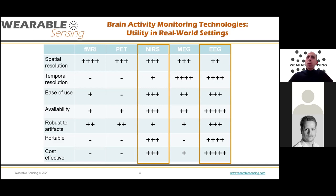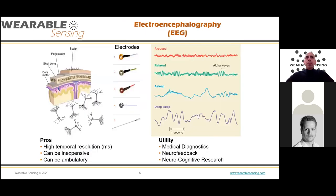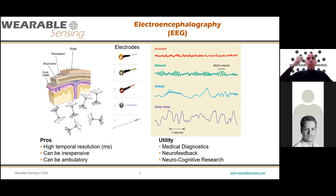EEG is a measure of the electrical activity of the brain from the surface of the scalp. When enough neurons close together fire together, their post-synaptic potentials create local field potentials that spread through the brain, across the skull, and to the skin. To record them, we rub a layer of dead skin off, place cuff electrodes, inject gel through the hole, making a low-impedance contact for the tiny EEG signals to reach the amplifiers.